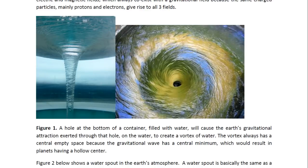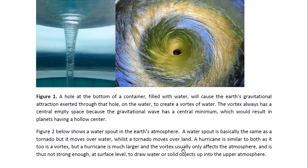The water is attracted towards the hole, so the hole is acting like a source of gravitational field. But the vortex always has a hole in the middle, a hollow space in the middle, and that is due to the fact that the gravitational field produces a gravitational wave associated with it that has a central minimum.